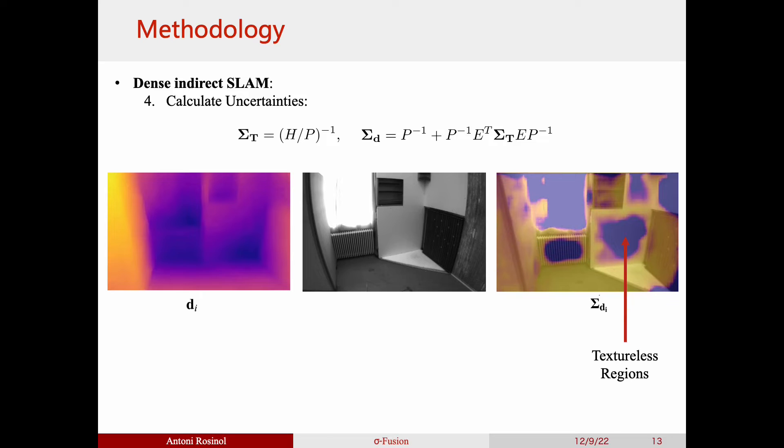Notice that the depth uncertainty is not only high for textureless regions, but also for aliased geometry, which is particularly difficult to triangulate using optical flow techniques, since these struggle to get the correct correspondences. Finally, we volumetrically fuse these depths using the estimated depth uncertainty as weights.